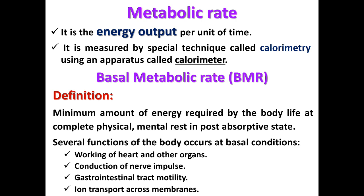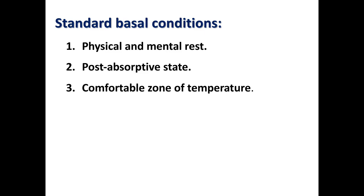Several functions of the body occur at basal conditions, like working of the heart and other organs, conduction of nerve impulses, gastrointestinal motility, and ion transport across the membrane. Basal metabolic rate represents an unavoidable cost of life.